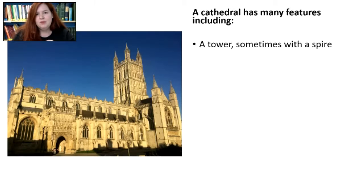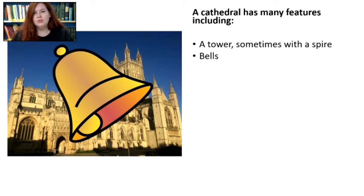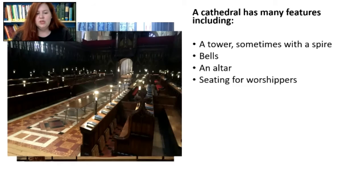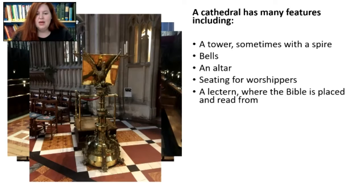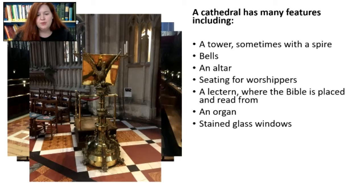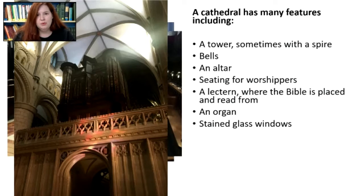A cathedral has many features. They generally have a tower, sometimes with a spire on top. They generally have bells to call people to worship. They tend to have an altar — we can see one from Gloucester Cathedral. You need seating for worshippers, and in Gloucester Cathedral there are lots of different areas to sit. You also need a lectern — a big, beautiful stand, normally in the shape of an eagle — where they put the Bible and read from in services. You also need an organ for music, and stained glass windows are also very important in most cathedrals.